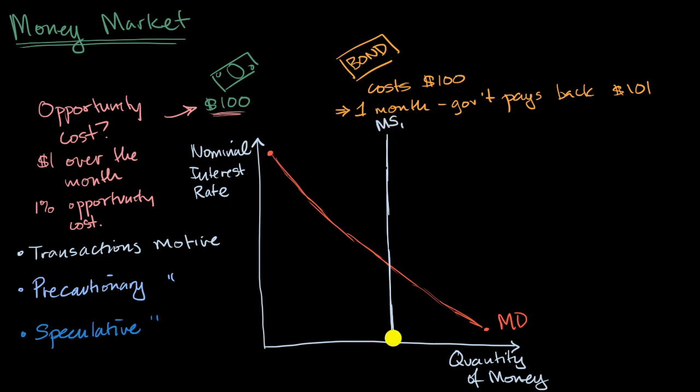I'll call that money supply one, where it intersects the quantity of money. I'll just call that M sub one right over here. And so this point where it intersects is the equilibrium point in our money market. The equilibrium nominal interest rate right over here, we could call R one. This would be the opportunity cost for holding money.